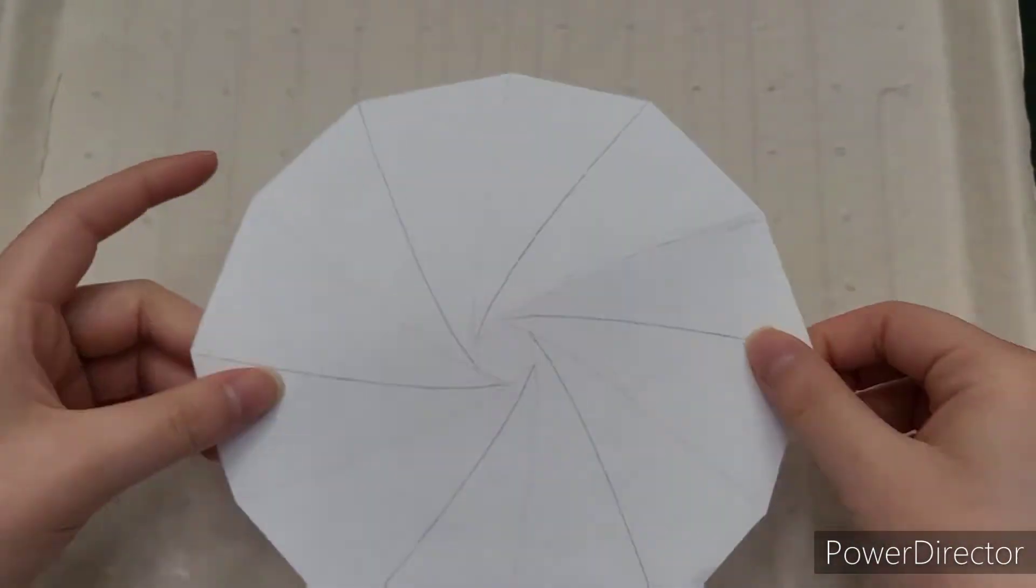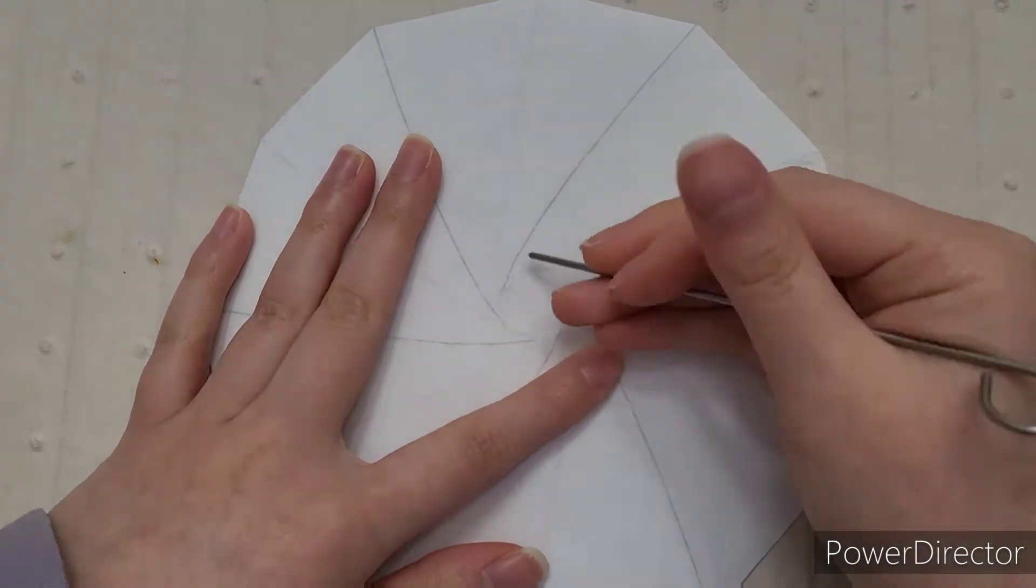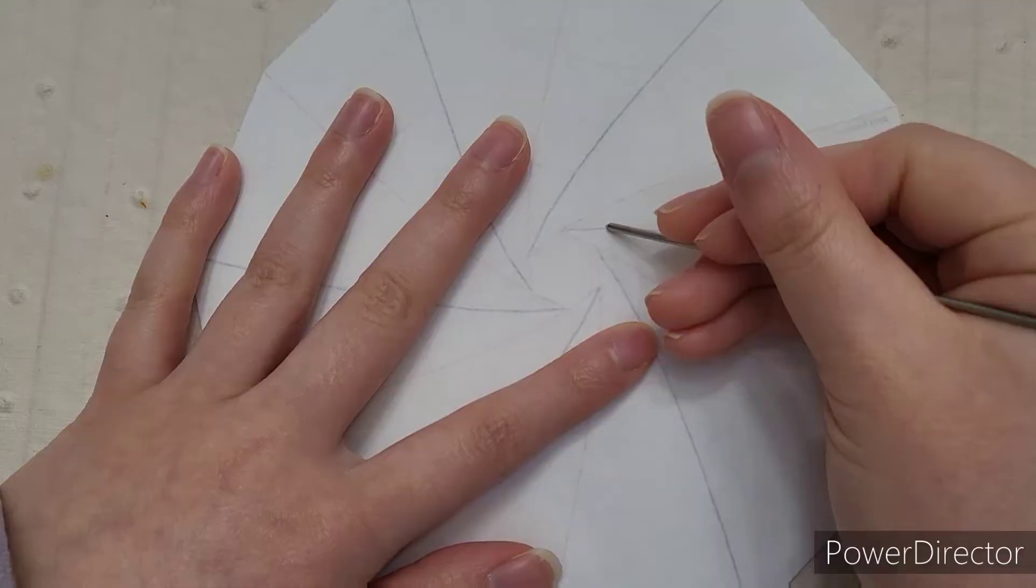Then, we could flip the template over to crease where the blue lines would be. This would create our mountain folds.